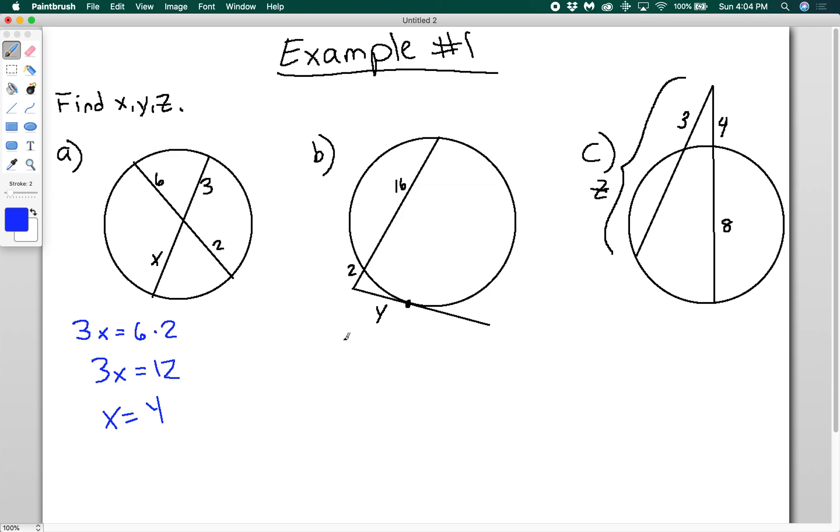Now let's look at one that is a secant and a tangent. I know that y squared—y is this little bit here, the tangent segment—y squared is going to be equal to 2 times the full secant segment, so times 18, not times 16. That's going to be y squared equals 2 times 18 is 36, so y will be 6. Could be negative 6, but obviously that doesn't make any sense.